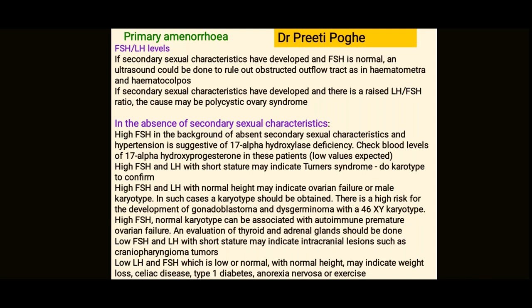If secondary sexual characteristics are absent, check LH and FSH. If FSH is high, secondary sexual characters are absent, and the patient also has hypertension, the diagnosis is 17-alpha-hydroxyprogesterone deficiency. These three features together — high FSH, absent secondary sexual characters, and hypertension — should prompt checking blood levels of 17-alpha-hydroxyprogesterone.